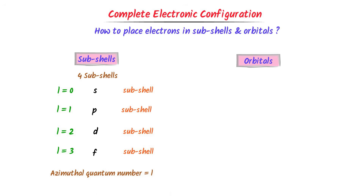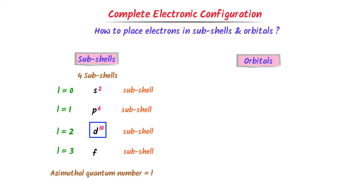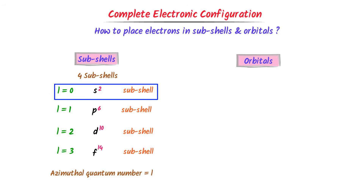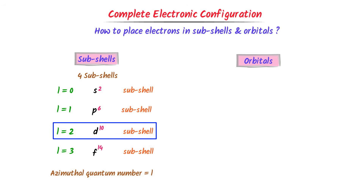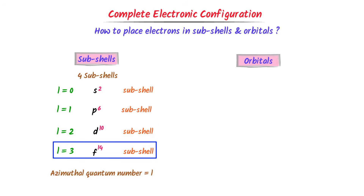What about the electrons of each subshell? I write 2 electrons and then add 4 electrons successively: 2+4=6, 6+4=10, 10+4=14. So S can accommodate 2 electrons, P can accommodate 6 electrons, D can accommodate 10 electrons, and F can accommodate 14 electrons.